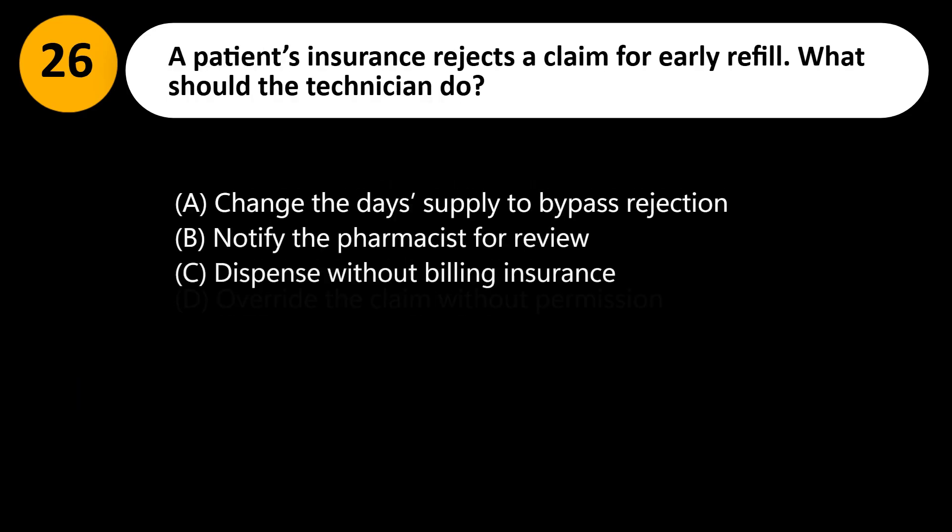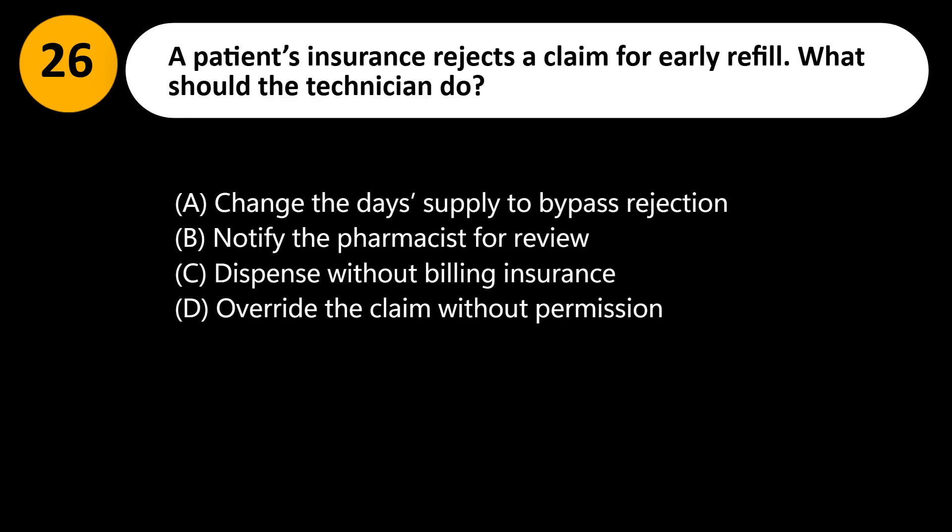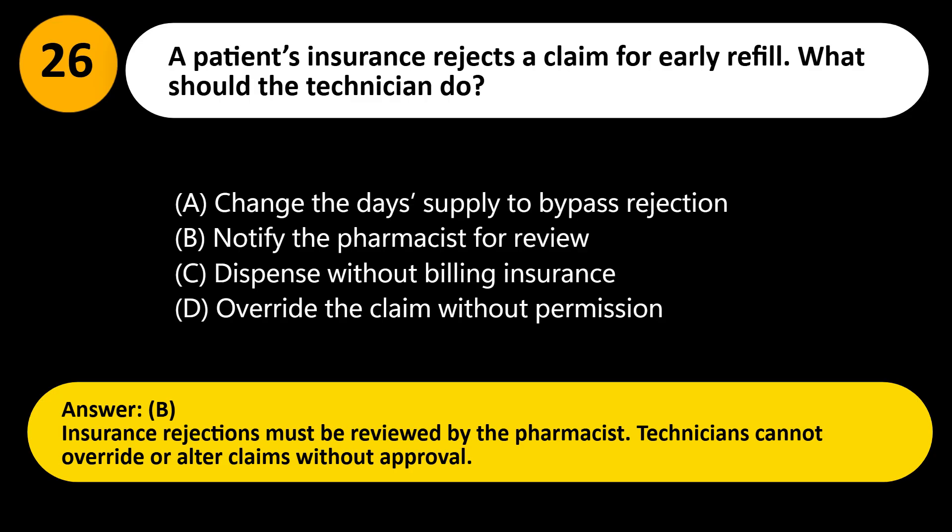A patient's insurance rejects a claim for early refill. What should the technician do? A. Change the days supply to bypass rejection. B. Notify the pharmacist for review. C. Dispense without billing insurance. D. Override the claim without permission. Answer: B. Insurance rejections must be reviewed by the pharmacist. Technicians cannot override or alter claims without approval.